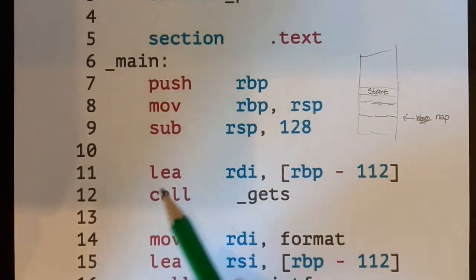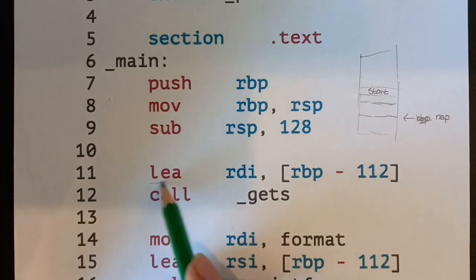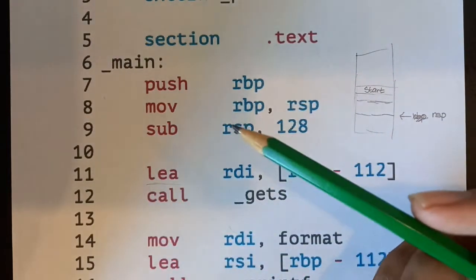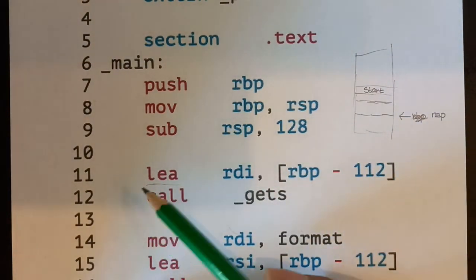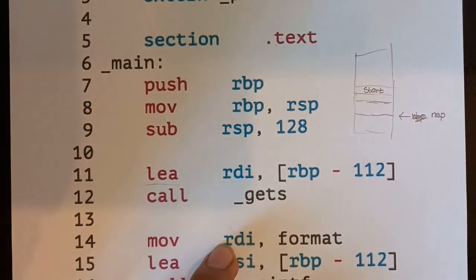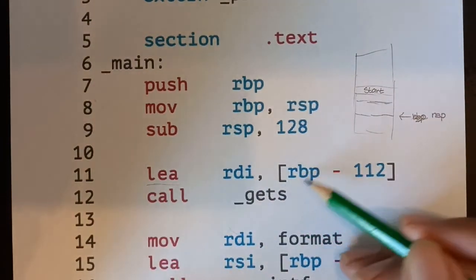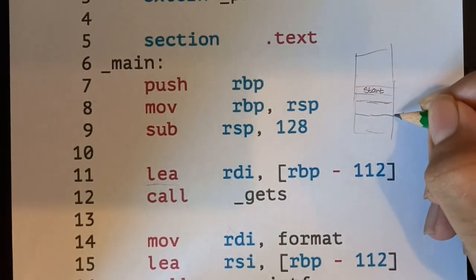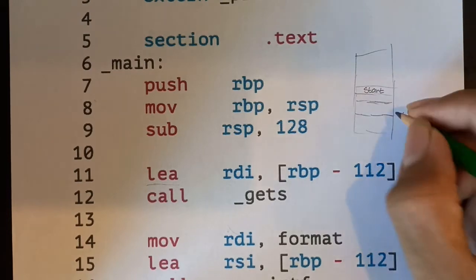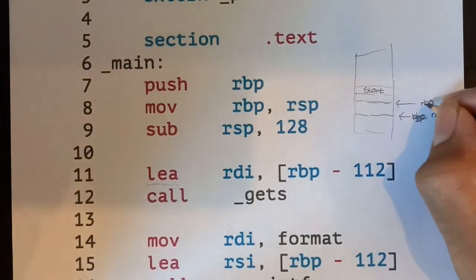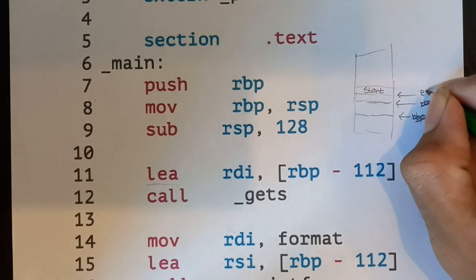There's also this command here, LEA, which might be unfamiliar to some of you guys. What this essentially means is load effective address. So what it does is instead of like this notation where you have brackets is like a dereference operator. So it's like the asterisk in C, right? So we're saying, okay, the value of RBP. Take the pointer. So this thing minus it by 112. So it's like, I'll just draw it. My bad. RBP is here, right? Minus it by 112.